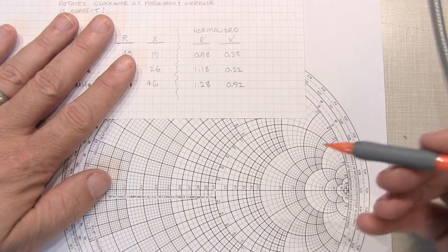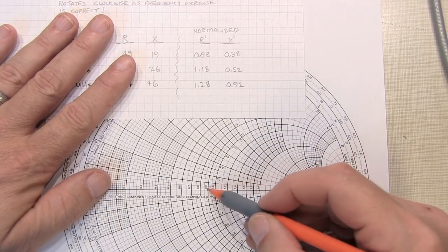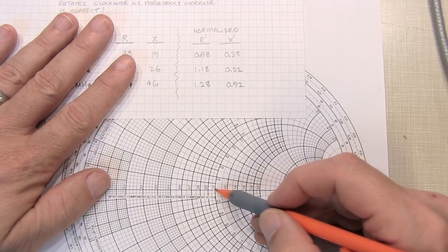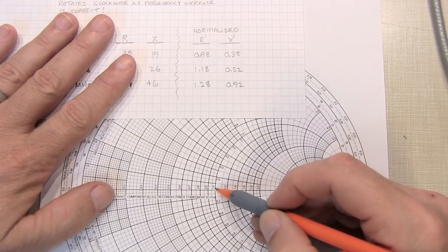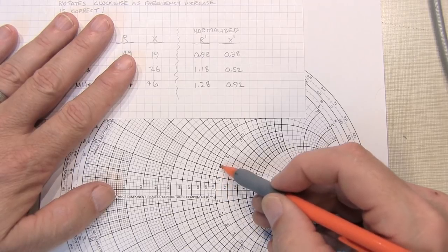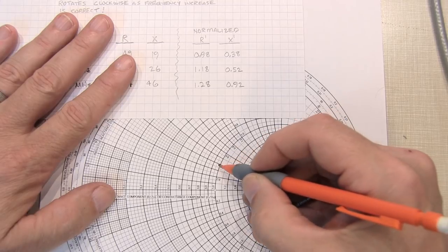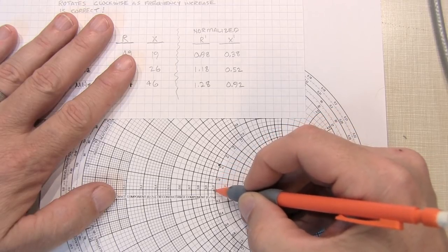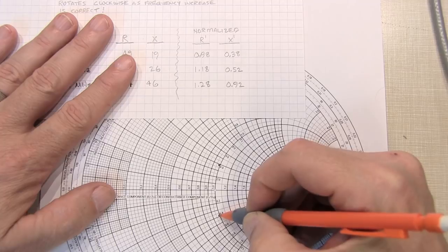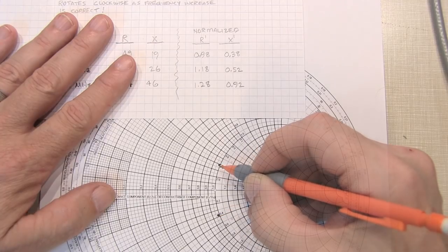We'll start off with 0.98 and 0.38. So 0.98 on the real axis is going to be really close to this unity circle, and the 0.38, let's start with the positive one, is going to be very close to the 0.4. So our first point is right here. And then to plot the negative version of that, we go down here for negative 0.38. So those are our first two points.